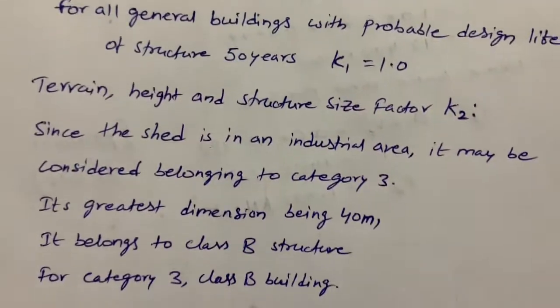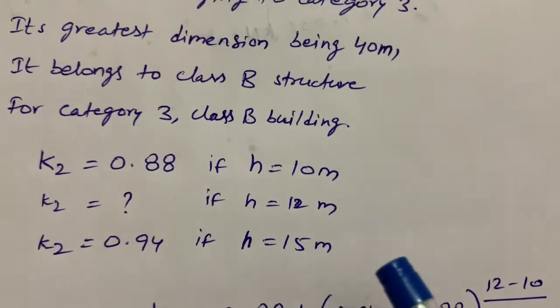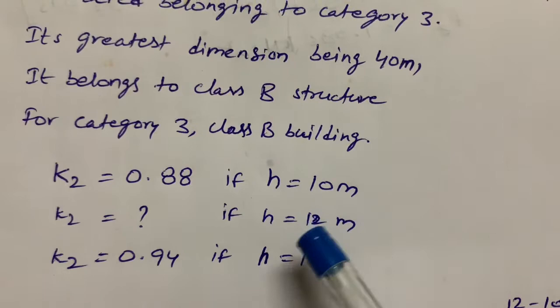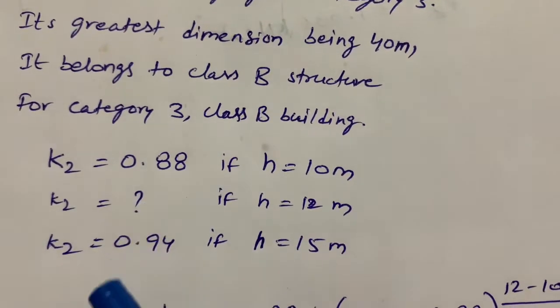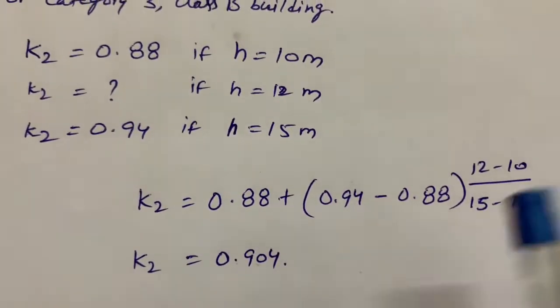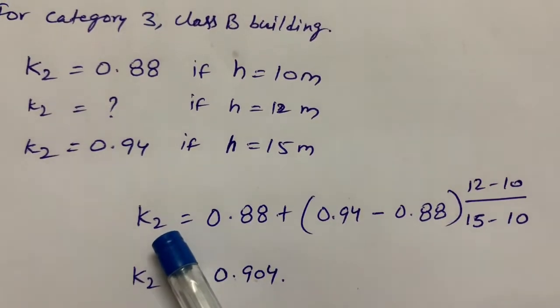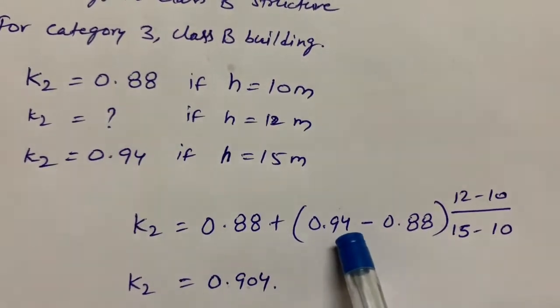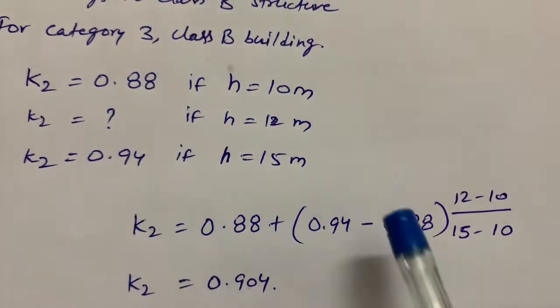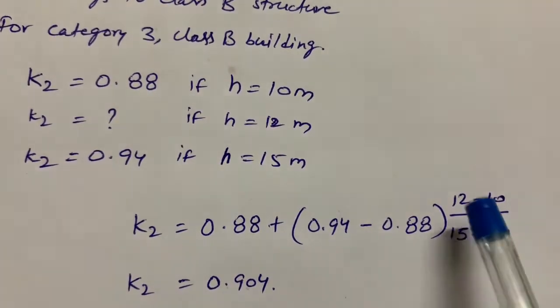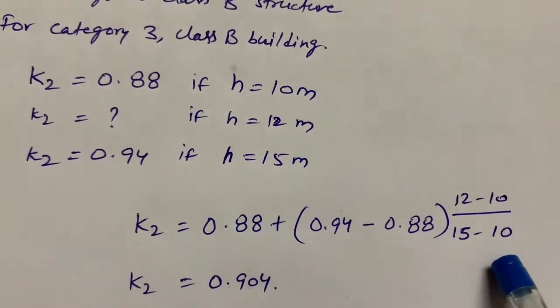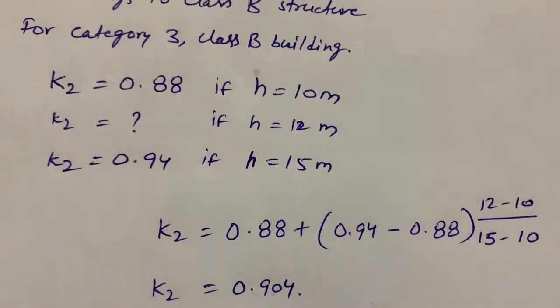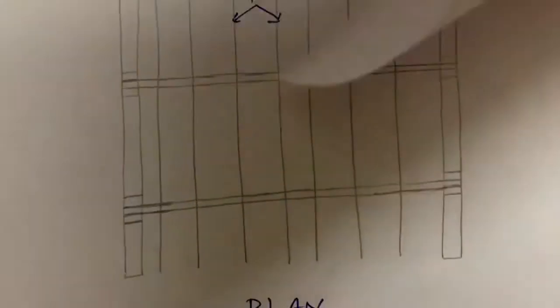So for 12 meters we need to do interpolation, since 12 is in between 10 and 15. K2 = 0.88 + (0.94 - 0.88) × (12 - 10)/(15 - 10), so I got K2 value as 0.904 by using interpolation.